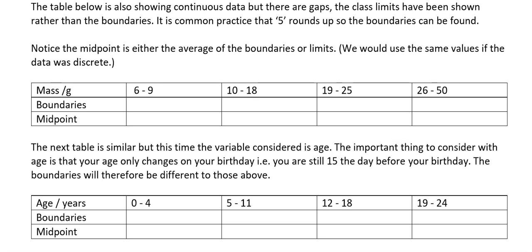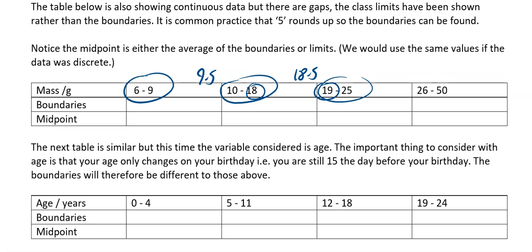We're looking and thinking what are our boundaries first of all, and what are our midpoints. The first one goes from 0 to 9, and the next one goes from 10 to 18. So the boundary of this one is going to be 9.5 — halfway between the 9 and the 10. Likewise, this one goes from 18 and then it jumps to 19, so 18.5 is your boundary. And this one goes from 25 then 26, so it's going to be 25.5.